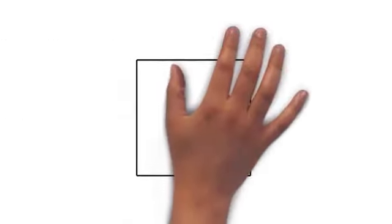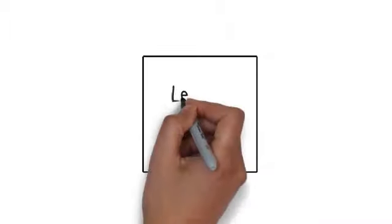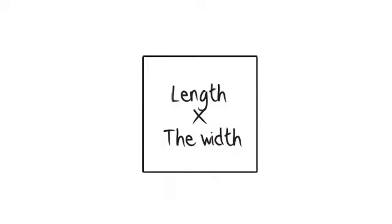With the area of common shapes let's start off with a simple square. How do you work out the area of a square? All you do is multiply the length times the width.